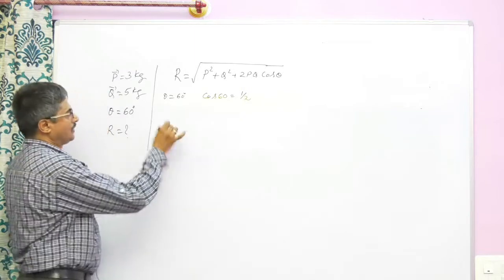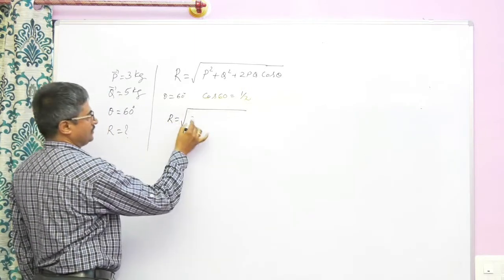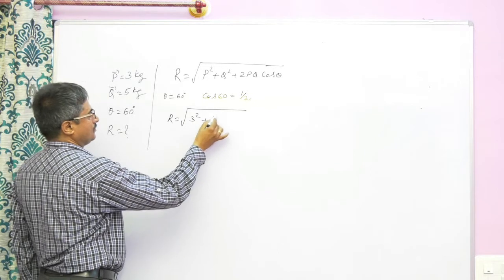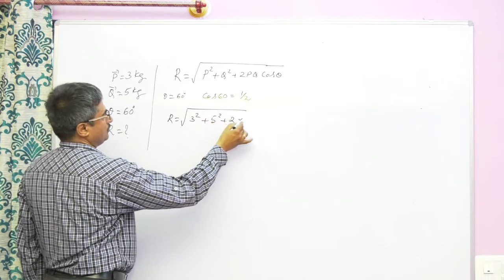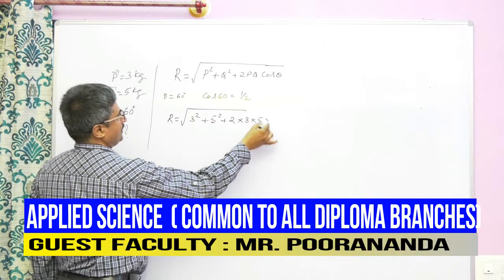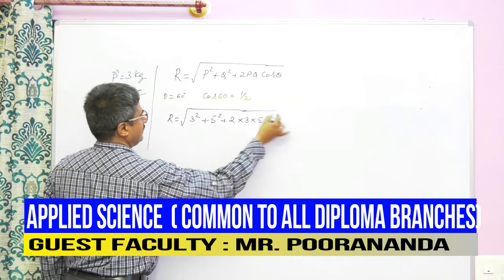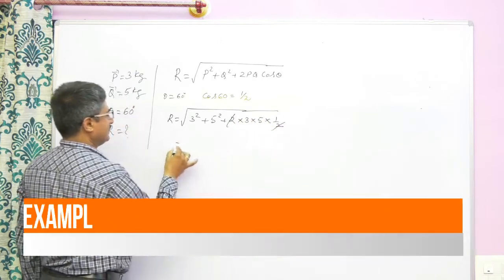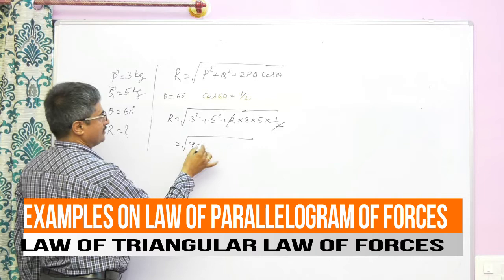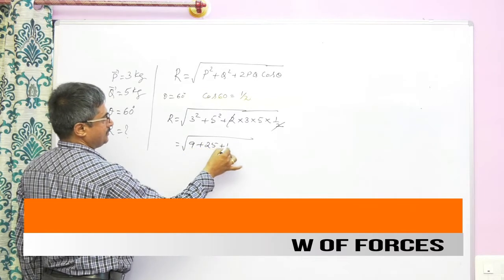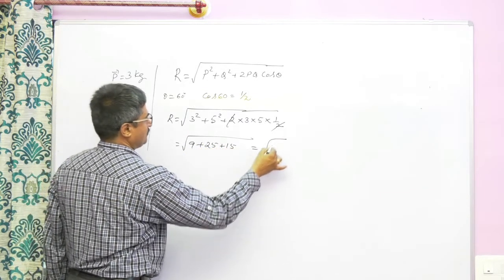Therefore r equals, very simple, square root of 3 square, 5 square, 2, 3 into 5 into cos theta is half. 2 gets cancelled, therefore it is 9 plus 25 plus 15.